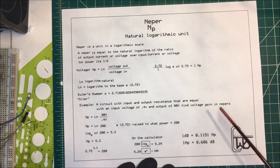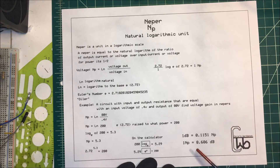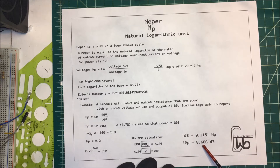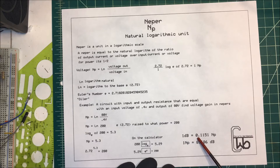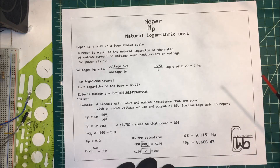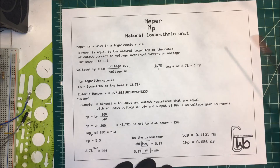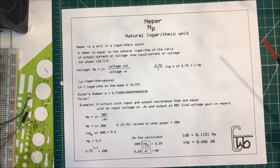If we want to convert to decibels: 1 Neper is equal to 8.686 decibels, and 1 decibel is equal to 0.1151 Nepers. So that's a Neper — thank you.